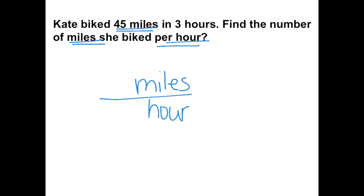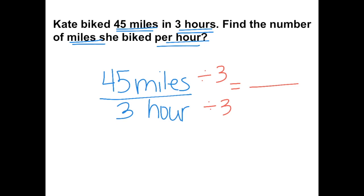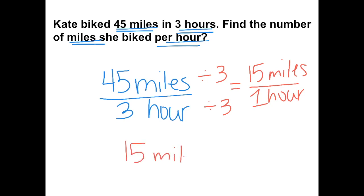She biked 45 miles in three hours, and we want to know how much she biked in one hour. Dividing by the denominator: 45 divided by three gives us 15 miles, and 3 divided by 3 gives us one hour. So she biked 15 miles per hour — and this is our unit rate.